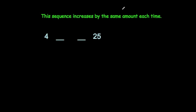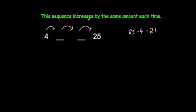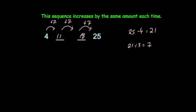This time the sequence increases by the same amount each time and goes 4, blank, blank, 25. So we add a number three times to go from 4 to 25. 25 take away 4 is 21, and 21 divided by 3 is 7. That means we add 7 each time. In these questions, find what you go up overall from first to last number, then divide by how many steps. 4 plus 7 is 11, 11 plus 7 is 18, and 18 plus 7 is 25.